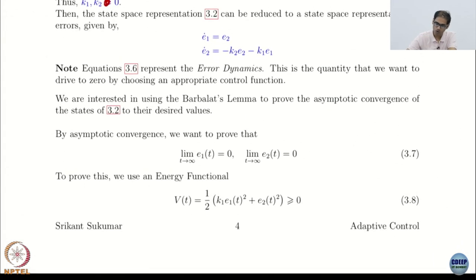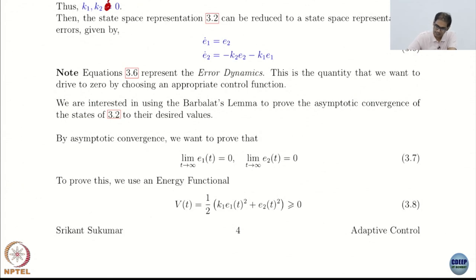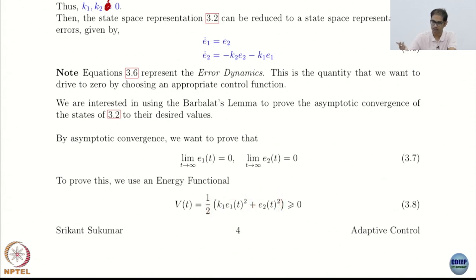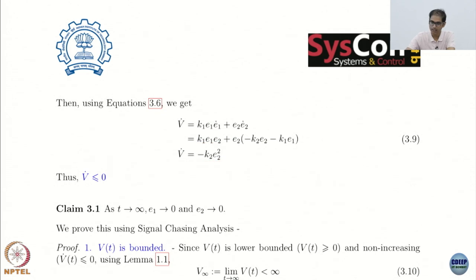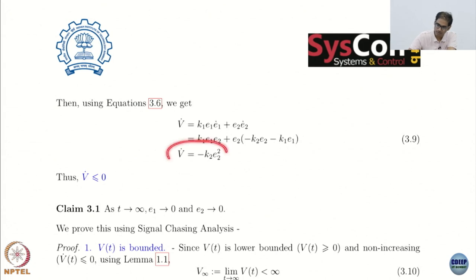I take a very standard Lyapunov function, which is the energy of the system: (1/2)k1*e1² + (1/2)e2², combining potential energy and kinetic energy. This is non-negative. Then I take derivatives along the trajectory. The first term gives k1*e1*e1_dot, the second gives e2*e2_dot. Plugging in e1_dot = e2 and e2_dot from the dynamics, I get minus k2*e2². This is only negative semi-definite because it contains only one state.